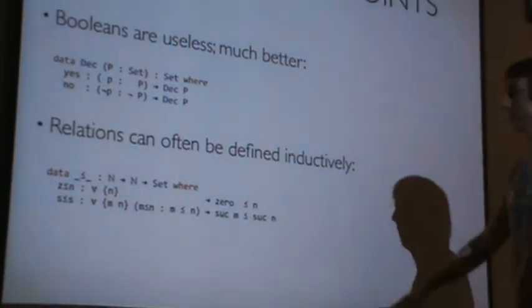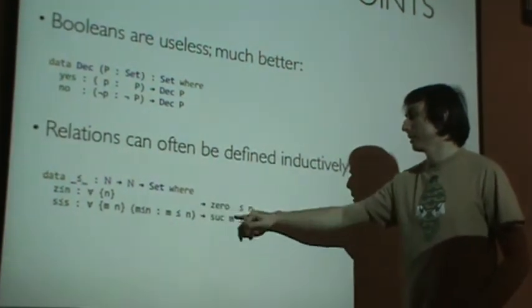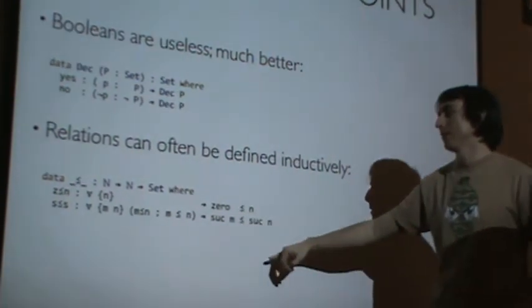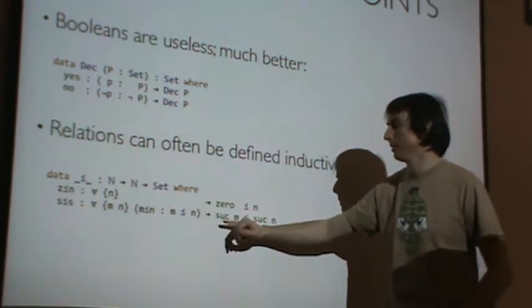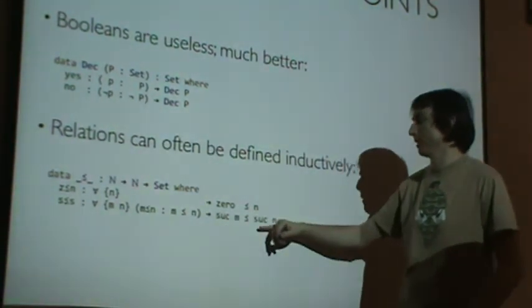This is basically a constructor that says zero is less than anything. For all n, zero is less than n. And successor saying, well, for all m and n, if I know that m is less than n, then I know that m plus one is less than n plus one.